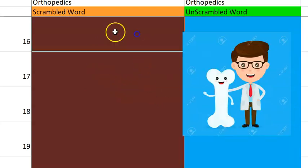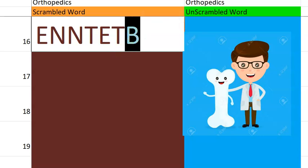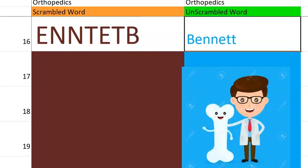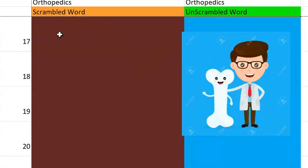Now let's go to the sixteenth one. What do you think this is? It starts with a B — a fracture of the hand. Bennett fracture. Basically fracture of the base of the first metacarpal bone, which extends into the carpometacarpal joint. Something to do with your thumb, first metacarpal. That's Bennett.